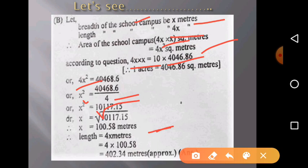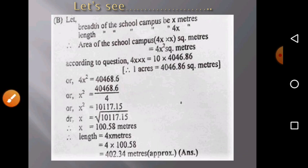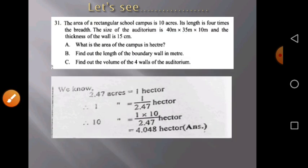Now question C: Find out the volume of the four walls of the auditorium.